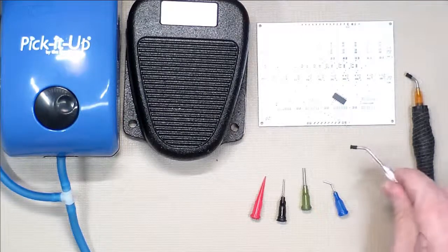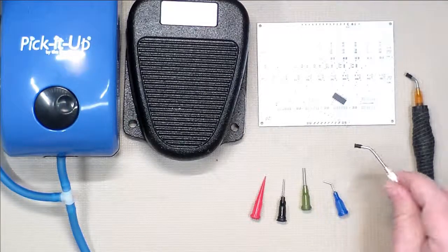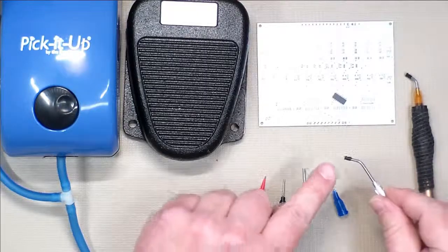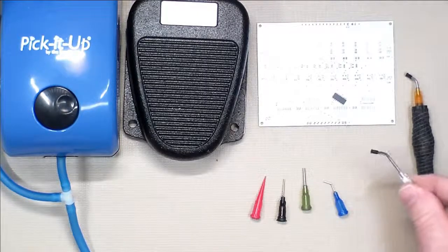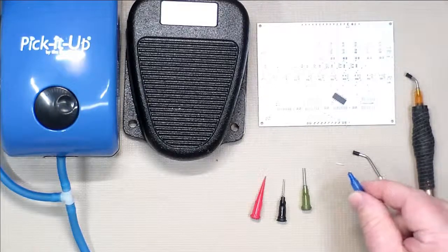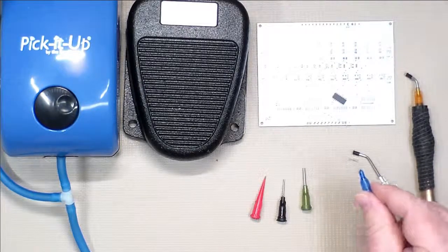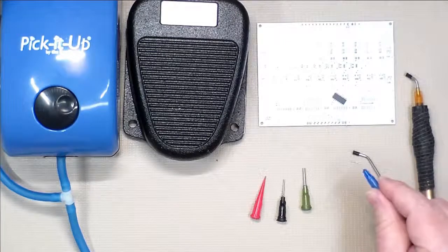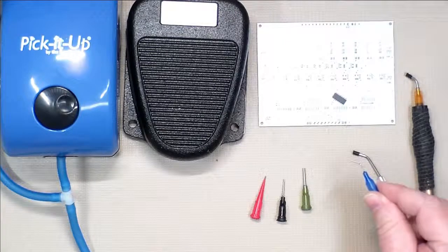This particular one has a long needle with a 45 degree bend with a plastic housing for picking up larger parts. You can get smaller ones with a 45 degree bend, and this one's really good for picking up 0402 and 0603 parts.